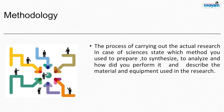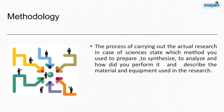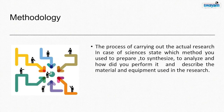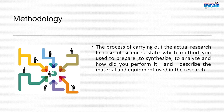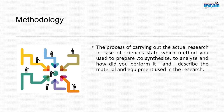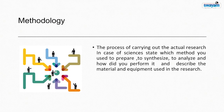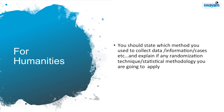Now let us take the methodology. Methodology involves the process of carrying out the actual research. In case of sciences, state the method you are going to use to prepare, synthesize, and analyze; mention how you performed it; and describe the materials and equipment used. For humanities, state which method you are going to use to collect data, information, or cases, and explain any randomization techniques or statistical methodology you are going to apply. Methodology can usually be divided into a few sections depending upon the area of research. Methodology should be clear, concise, and conclusive.